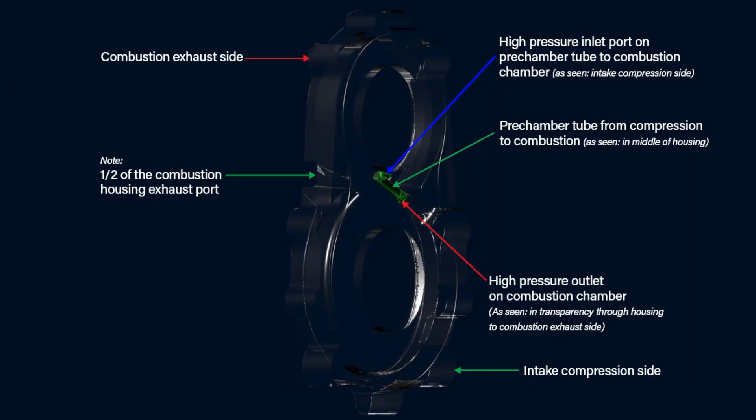Next, as we zoom in, we have the combustion exhaust side. Note this is one half of the combustion housing exhaust port. Moving towards the center, we have the high-pressure inlet port on pre-chamber tube to combustion chamber, as seen intake compression side.